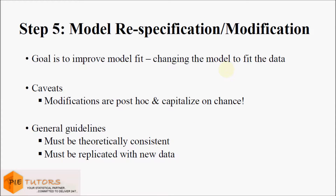The last step in conducting confirmatory factor analysis is model re-specification or model modification. It is important to remember that if we have missing values we will not be able to generate some information in software such as AMOS, which is particularly useful in model specification. Therefore we should make sure our dataset does not have missing values when using AMOS for SEM analysis. The goal in this step is to improve the overall model fit by changing the model to fit the data. Using modification indices we can determine what modifications can be done, such as adding a correlation between error terms. Modification indices give an estimate of the improvement in the model by suggested re-specification. However, modification indices are post hoc and capitalize on chance and may not be consistent with theory.